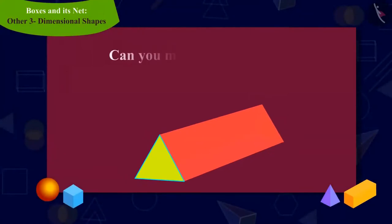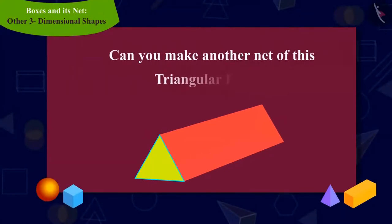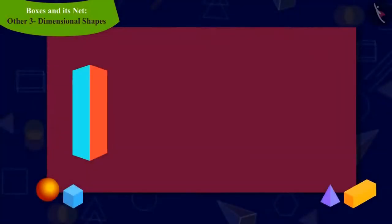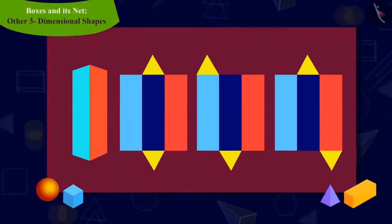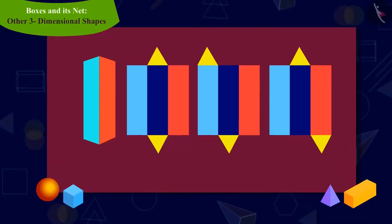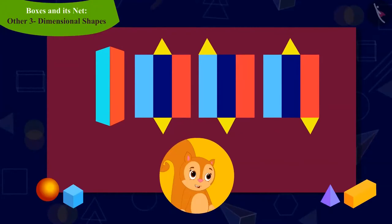Kids, can you make another shape of a net of a triangular prism? You can pause the video to find the answer for this question. Well done, kids! You can also make a shape of net of a triangular prism in these ways. You solved the confusion of Chanda by making these shapes of nets.